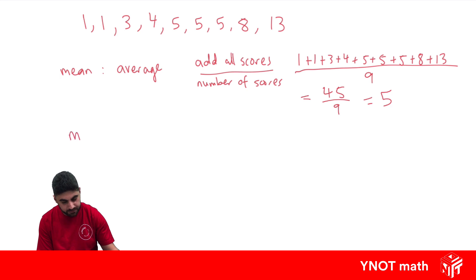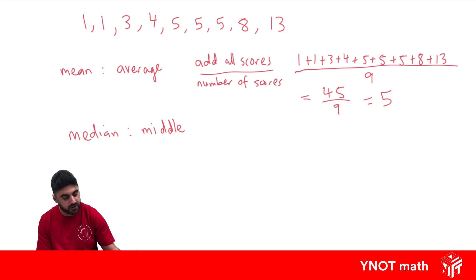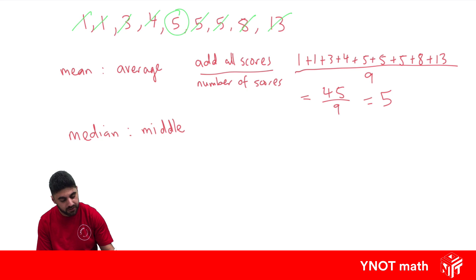What about the median? The median is the middle score. To work out the middle score, we can cross off data on each end, as long as the scores are in ascending order — which they are here, going from smallest to biggest. So we cross off one from the front, one from the back, repeating until we find the middle. And now we can see that the middle score is 5, which is the median.